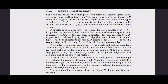Pictorially, each process Pi is represented as a circle and each resource type Ri as a rectangle. Since resource type Ri may have more than one instance, each instance is represented as a dot within the rectangle. Note that a request edge points only to the rectangle Rj, whereas an assignment edge must also designate one of the dots in the rectangle.